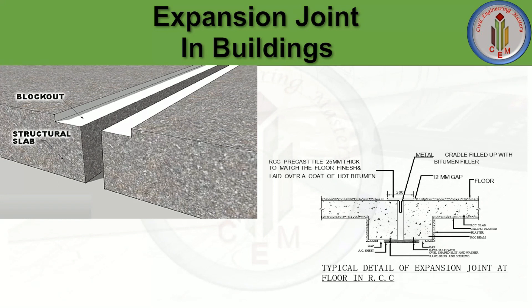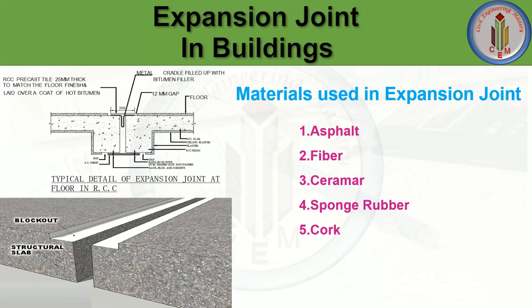The materials used in expansion joints are: Asphalt — a durable and flexible material that creates a permanent waterproof sealing; Fiber — a versatile, non-extruding, and flexible material; Ceramor — a lightweight, highly flexible material composed of isomeric polymers; Sponge rubber — an easily compressible material; and Cork — which has very good expansion properties, can extend up to 140% of its original thickness, and can compensate for concrete shrinkage.